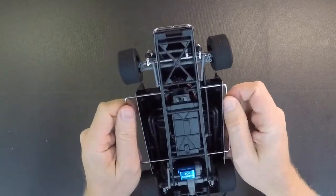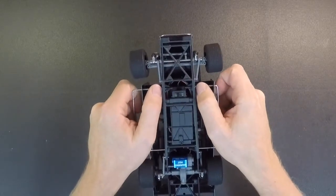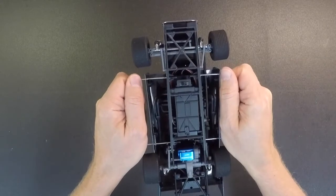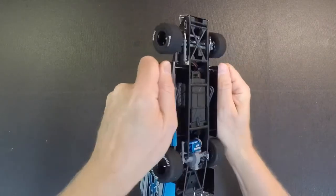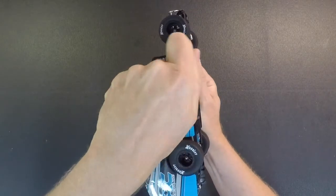For the side nerf bars, what we recommend doing, what we found is the best because these two get stuck into the cage a little bit, just grab the car by the nerf bars and just give them a little bit of a twist. So just twist them back and forth, just rotate them.